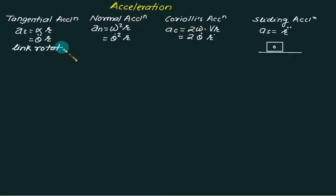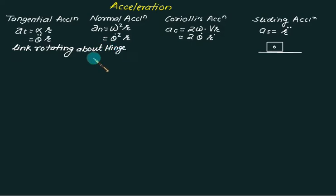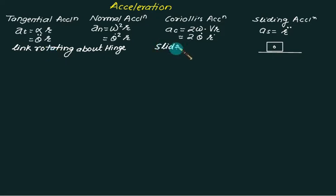We have a slider here. If a link is rotating about a hinge, then we have tangential acceleration and normal acceleration. If we have a link rotating about a hinge with a slider on it, then we have Coriolis acceleration. And if we have a pure slider where the link is fixed and we have only sliding motion, then we have sliding acceleration.